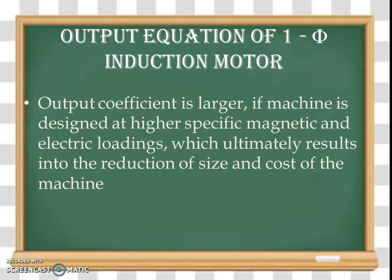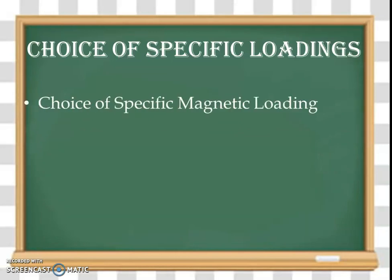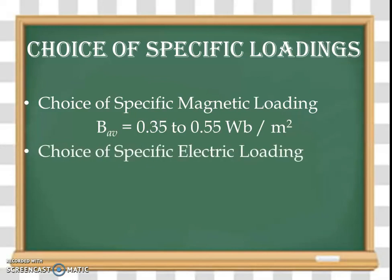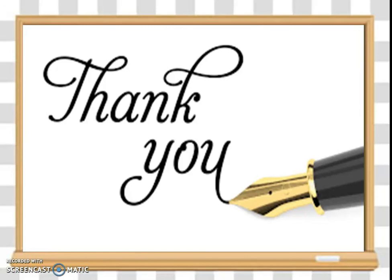There are certain restrictions when choosing specific magnetic and specific electric loading. For the choice of specific magnetic loading in the case of a single-phase induction motor, we can choose a value in the range of 0.35 to 0.55 Weber per meter square. Similarly, specific electric loading AC can be chosen in the range of 5000 to 15000 ampere-conductors per meter. By selecting these specific loadings, the output coefficient and main dimension D²L will be determined. Thank you very much for watching.